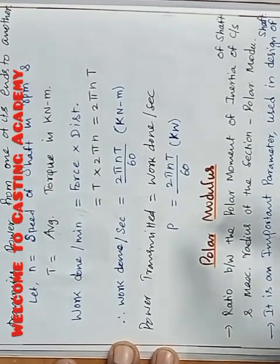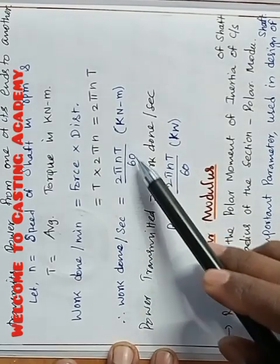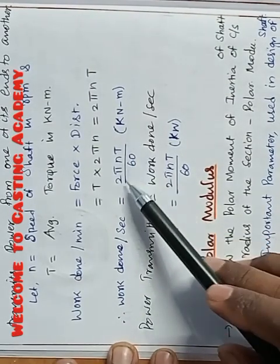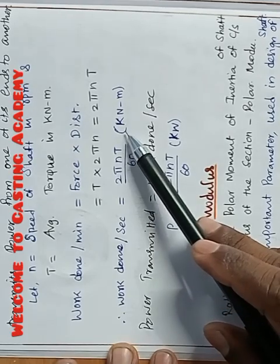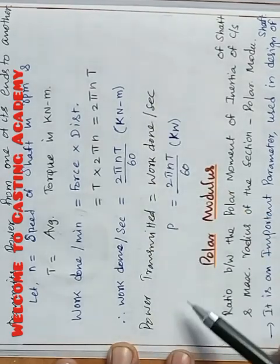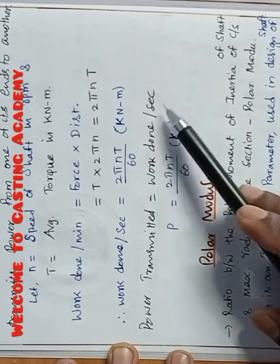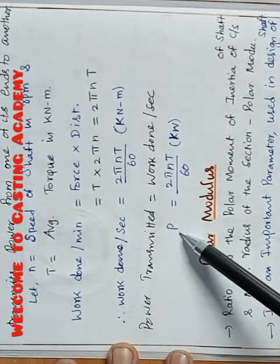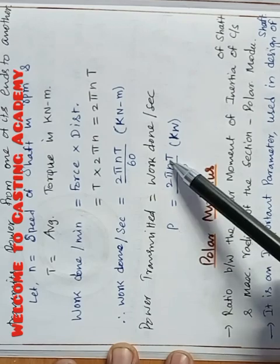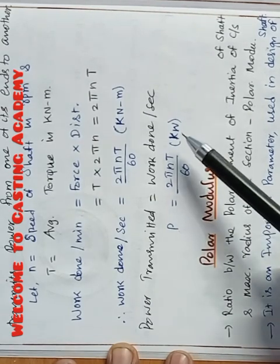Then work done per second is divided by 60. So here 2 pi NT by 60, unit is kNm. So power transmitted equals work done per second. P equals power transmitted, P equals 2 pi NT divided by 60 kW.